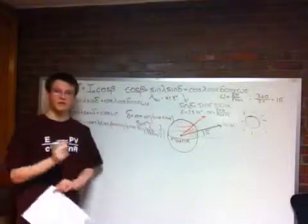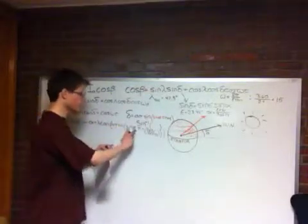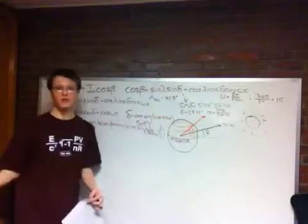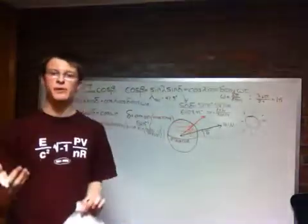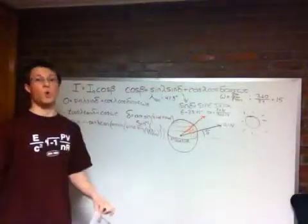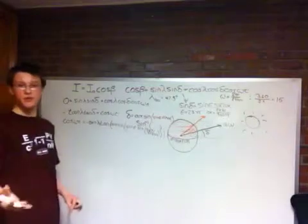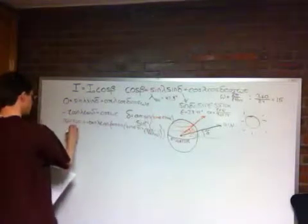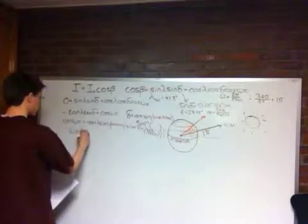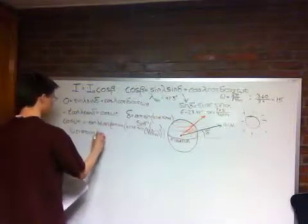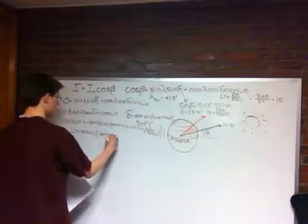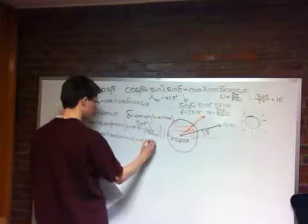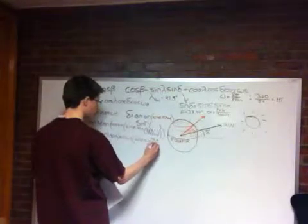And some of you might be thinking, well, arcsine of sine is just the argument of whatever the sine is. But arcsine of sine of some argument times sine of some other argument, the sine and arcsine do not cancel. So you are stuck with using it in this form. Now we have to take the inverse cosine or arc cosine of both sides because we want to solve for t. So taking the arc cosine, you have omega t is equal to the arc cosine of negative tangent lambda tangent of arcsine of sine epsilon sine 2 pi n over 365.24.